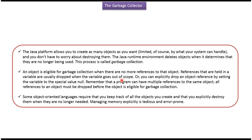An object is eligible for Garbage Collection when there are no more references to that object. References that are held in a variable are usually dropped when the variable goes out of scope. Or you can explicitly drop an object reference by setting the variable to the special value null.